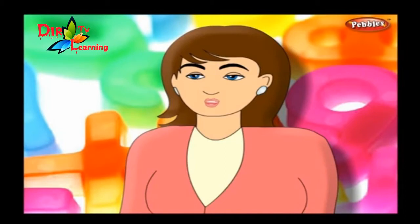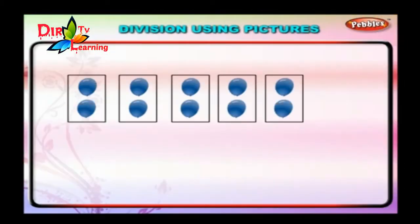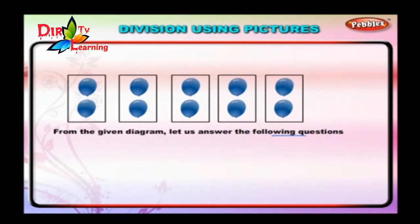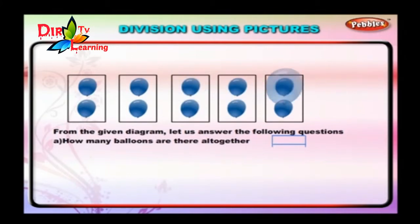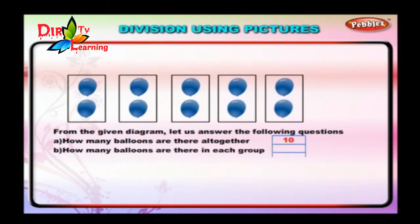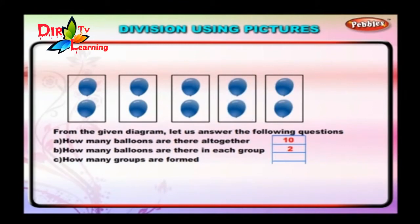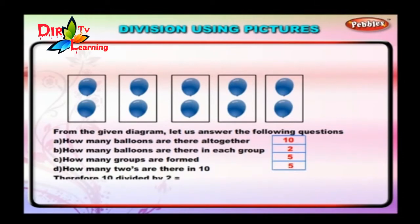Let us see a division problem using pictures. From the given diagram, let us answer the following questions. How many balloons are there in each group? There are 2 balloons in each group. How many groups are formed? There are 5 groups. How many 2's are there in 10? The answer is 5. Therefore, 10 divided by 2 is equal to 5.